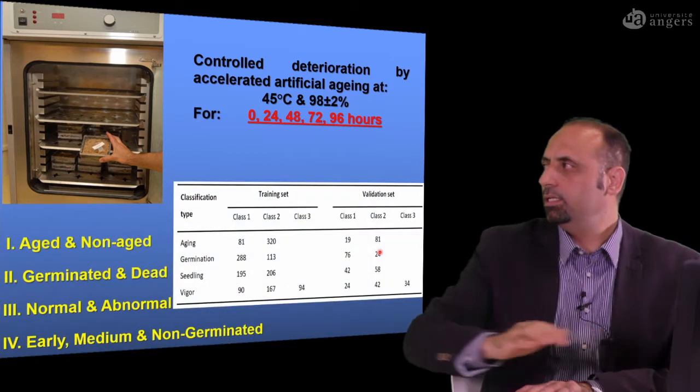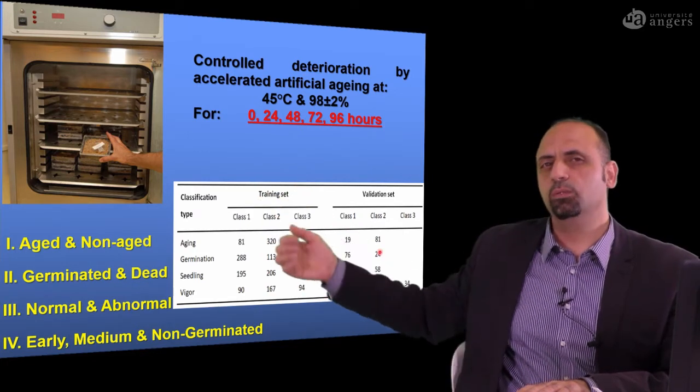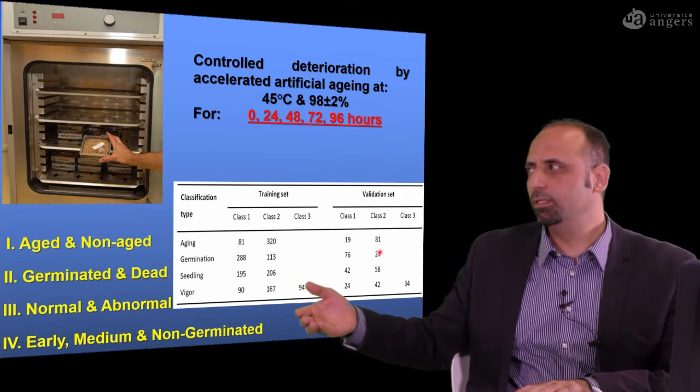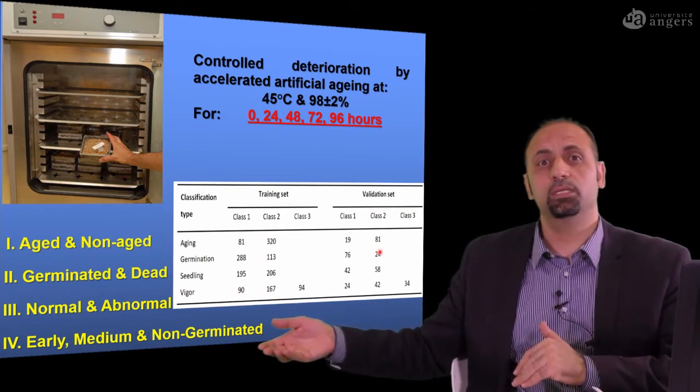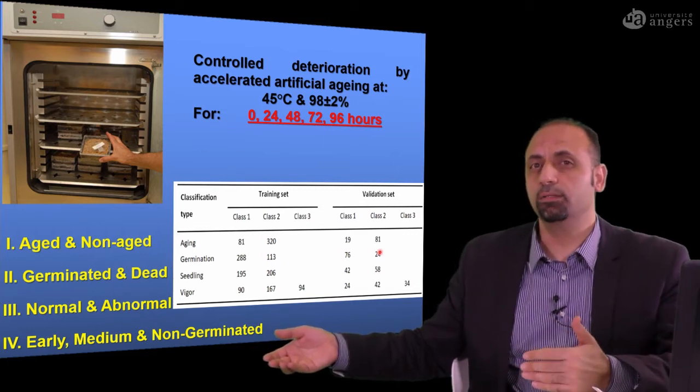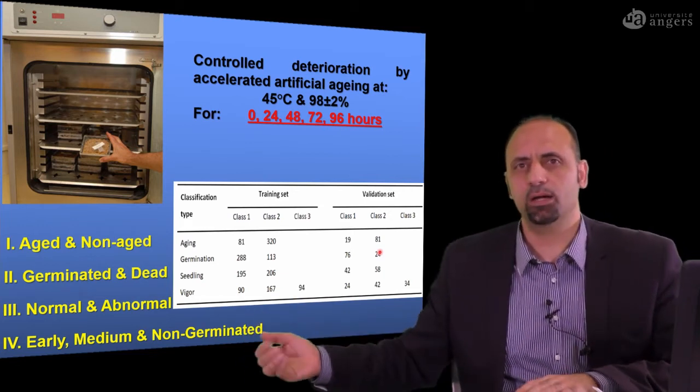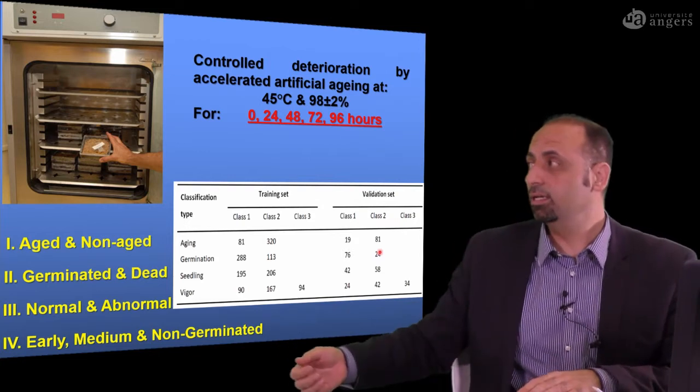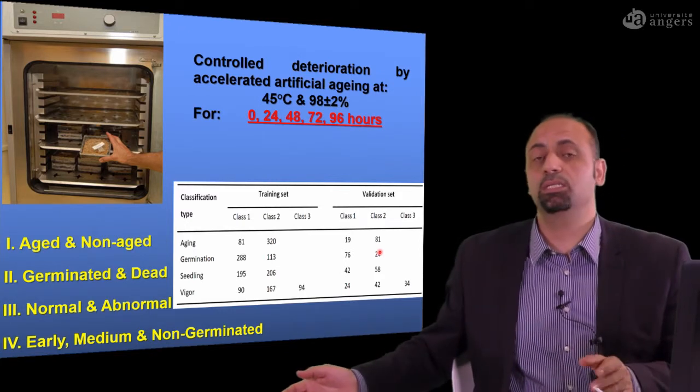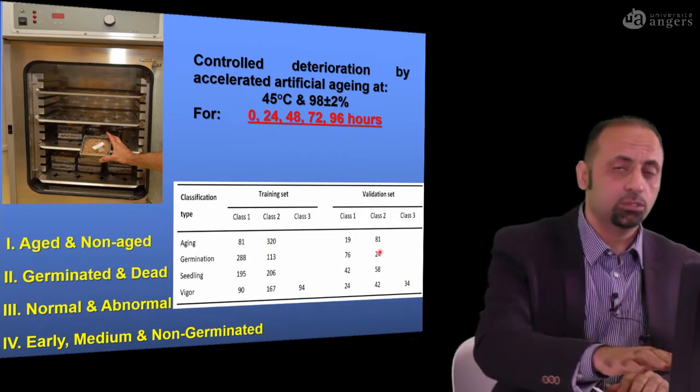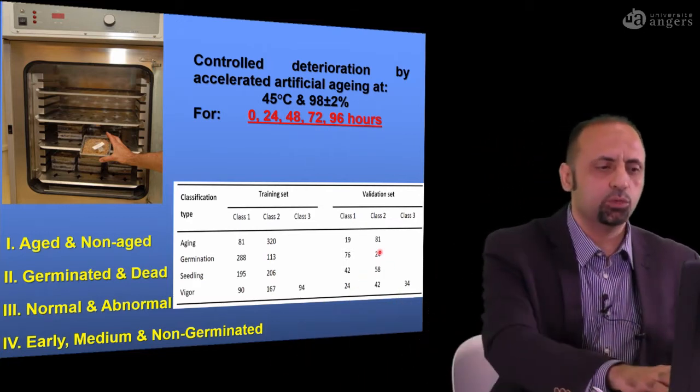We divide the seeds to different categories: training set and validation sets. After aging, we test the seeds, whether these seeds aged or unaged. Seeds after aging could be germinated or dead. Seeds also, after transplanting, could give you normal plants or abnormal seedlings. Finally, these seeds can germinate very fast, maybe within 24 hours or 48 hours, or could take medium period to germinate, or could be non-germinated at all. Different classifications.